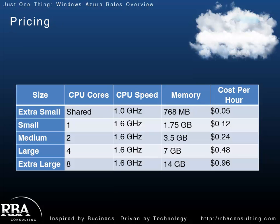Instance sizes range from Extra Small to Extra Large — those are the actual names. They go from a shared core all the way up to eight cores, with varying CPU speeds and memory. The cost is an hourly, per-instance charge. So if I have a single web role with two small instances running, that's 12 cents an hour times two, or 24 cents per hour.